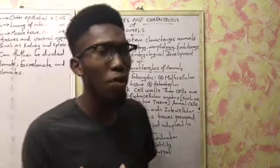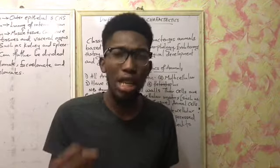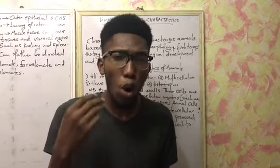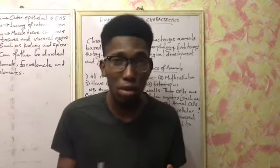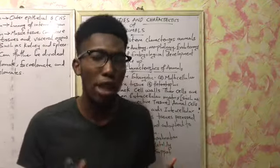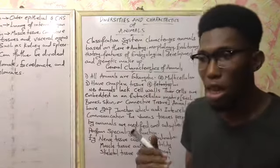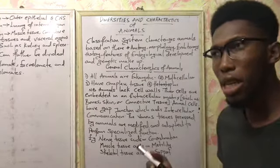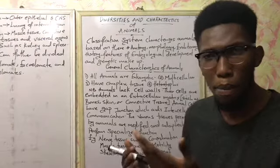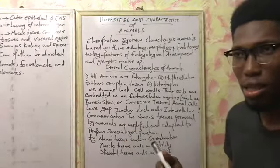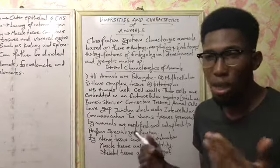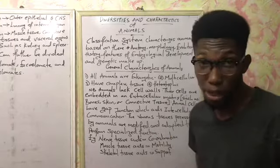Animals have complex tissues and they are heterotrophic. When we say heterotrophic, it means all animals do not have the capability to produce their own food — they depend on other organisms for food. On that basis, heterotrophic nutrition can take several forms: an animal can be a carnivore (flesh-eater), an herbivore (plant-eater), or an omnivore — feeding on both flesh and plants.